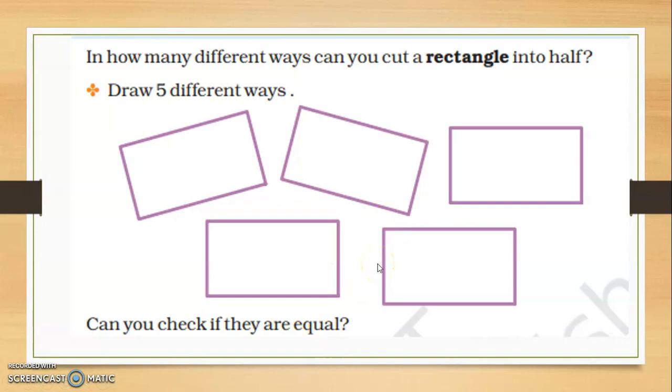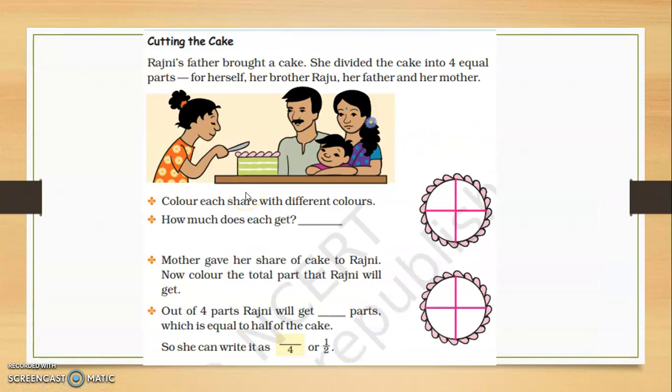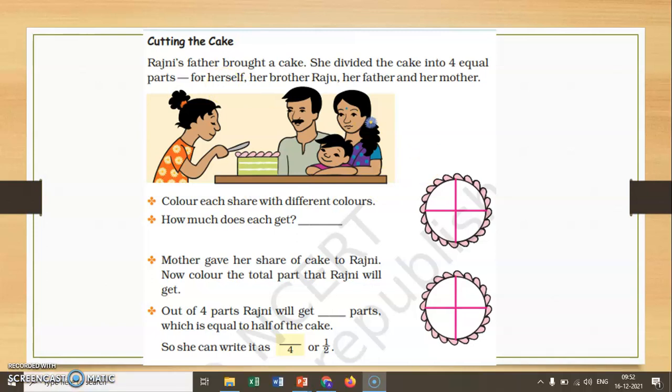Rajni's father brought the cake. Rajni divided it in four equal parts. This is for Rajni, this is for brother Raju, this is for mama, and this is for papa.